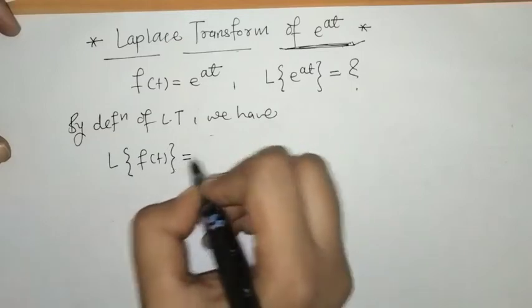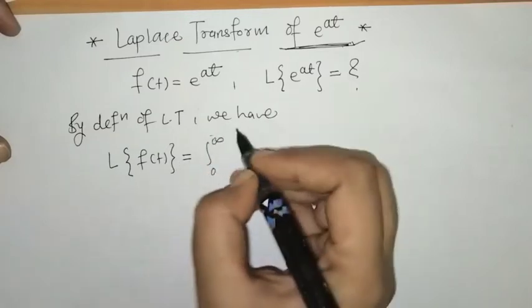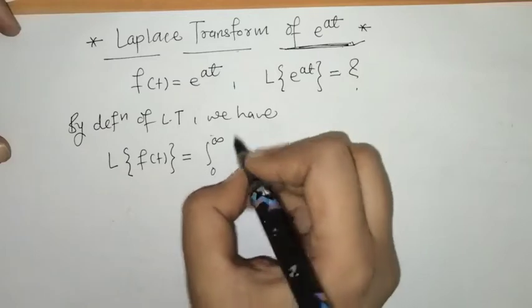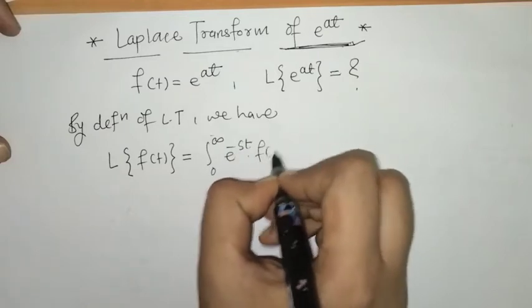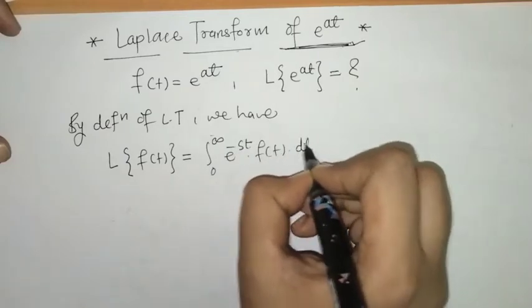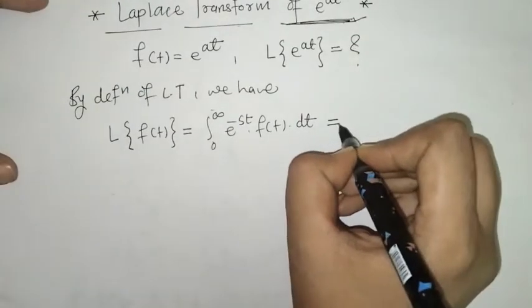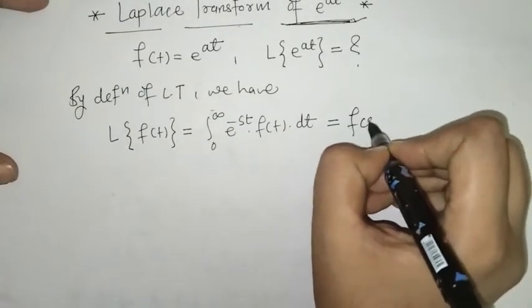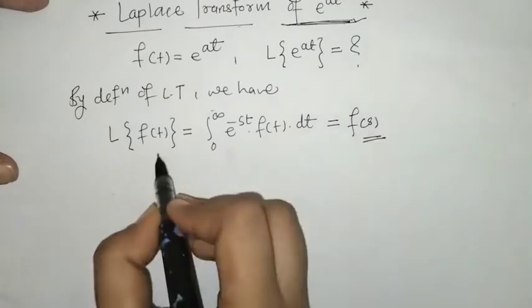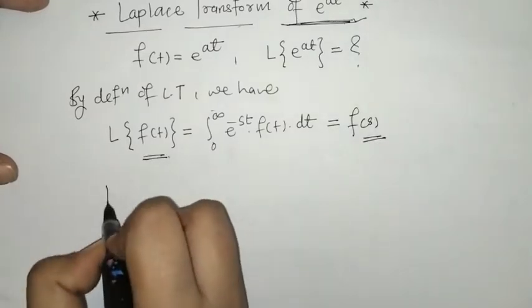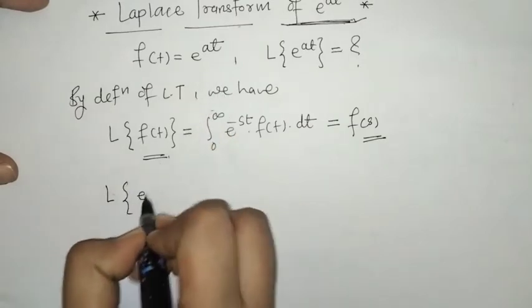By definition of Laplace transform, the Laplace transform of f(t) is given by the integral from zero to infinity of e^(-st) times f(t) dt. When we solve this integral, we get a function of variable s, which is called the Laplace of f(t).